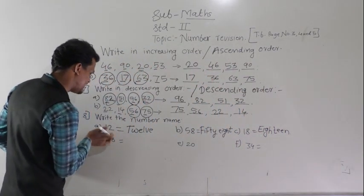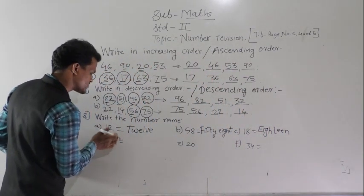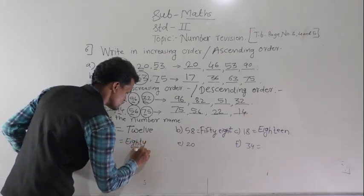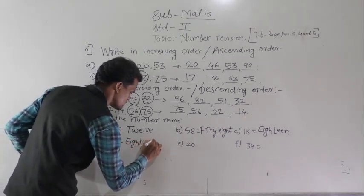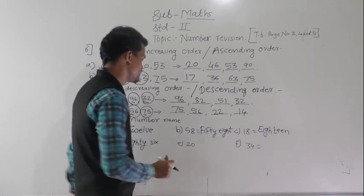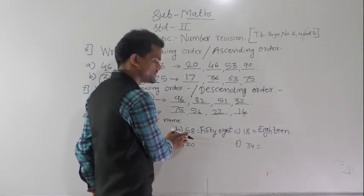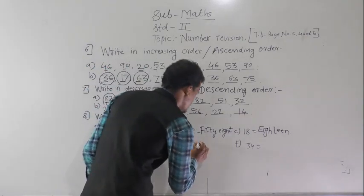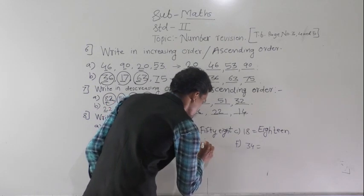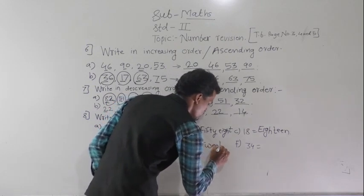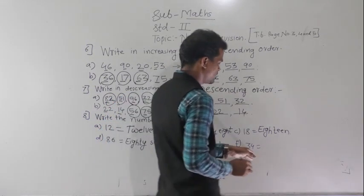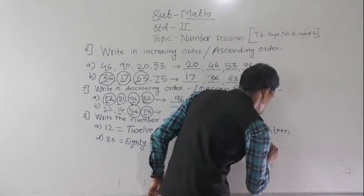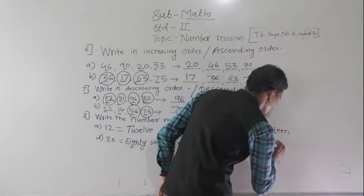Then 2 tens and 0 ones means 20. Then 3 tens and 4 ones means 34.